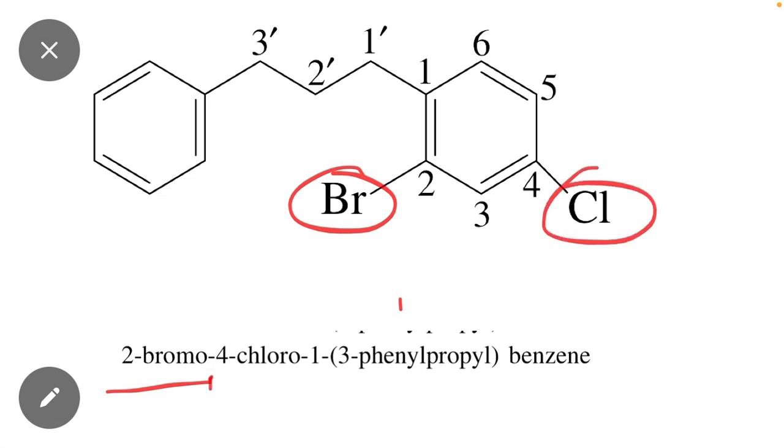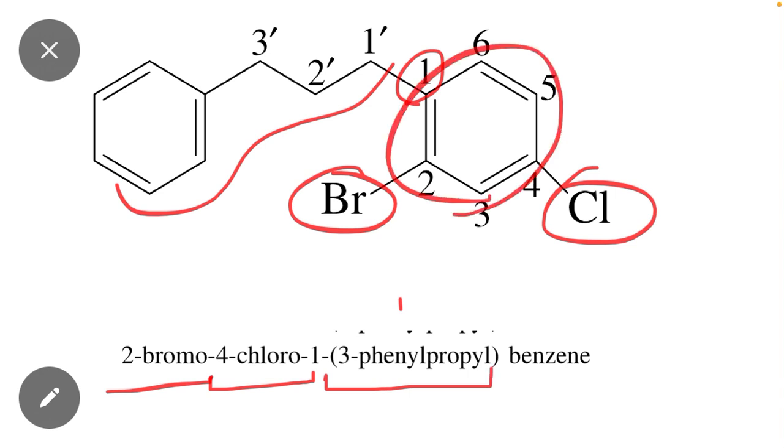And at position number 1, this substituent is present, and the name of this substituent is 3-phenylpropyl, and at the end of the name, benzene ring is benzene.